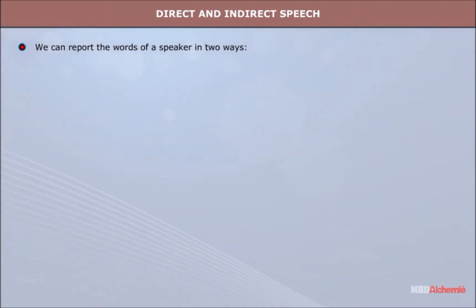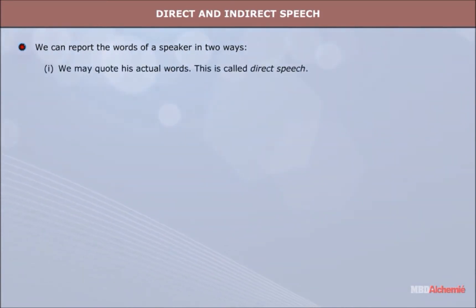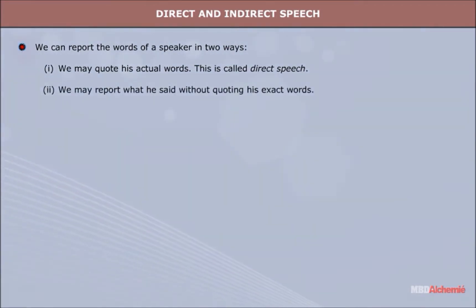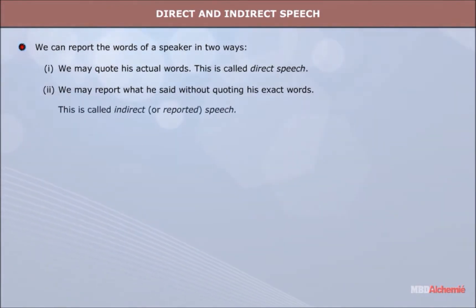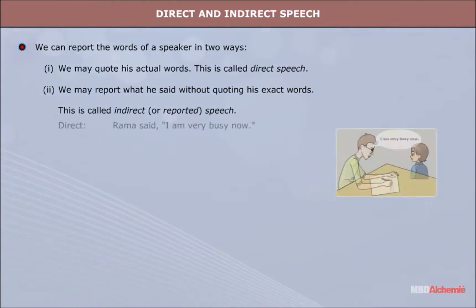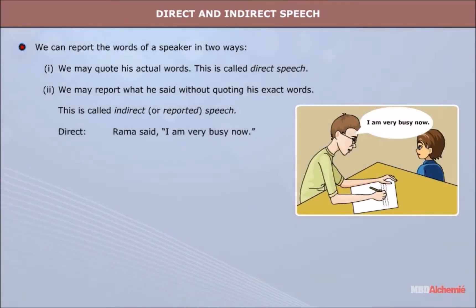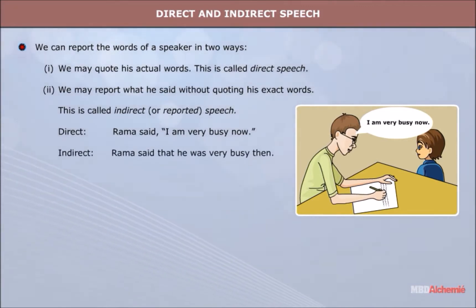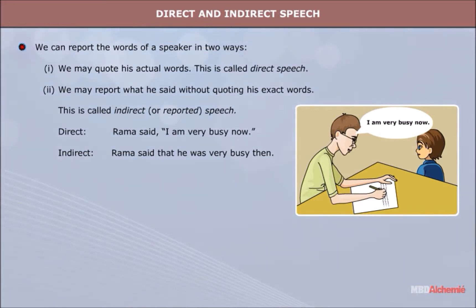Direct and Indirect Speech. We can report the words of a speaker in two ways. 1. We may quote his actual words — this is called direct speech. 2. We may report what he said without quoting his exact words — this is called indirect or reported speech. Direct: Rama said, 'I am very busy now.' Indirect: Rama said that he was very busy then.